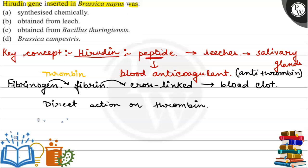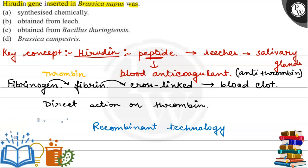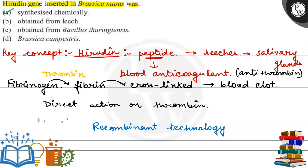The Hirudin gene is inserted using recombinant technology, and in this recombinant technology it is synthesized chemically. So the correct answer here is option A — synthesized chemically. Students, hope you understood it well. Best of luck.